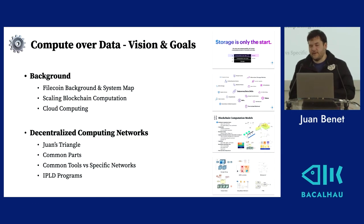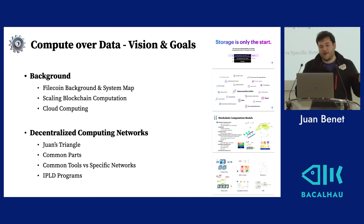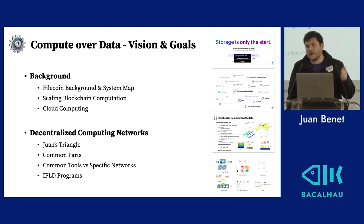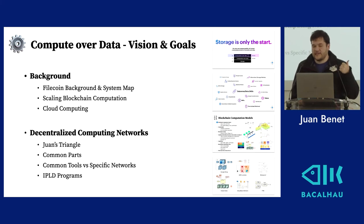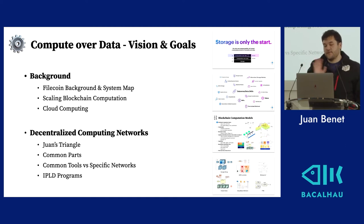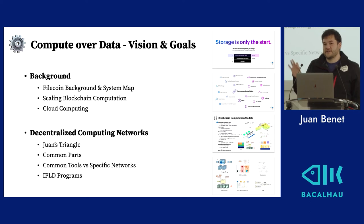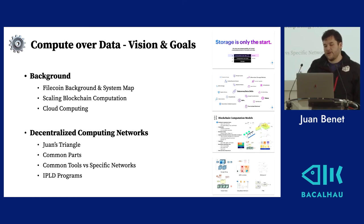I'm going to give a quick background for compute-over-data from the Filecoin perspective. I'll talk about scaling blockchain computation, cloud computing as background for decentralized computing networks, a triangle concept that's a key consideration for designing decentralized computing networks, an overview of common parts we should be working on as libraries, and then contrast those from specific networks. I'll finish with IPLD programs, a specific missing piece needed to enable a lot of this.